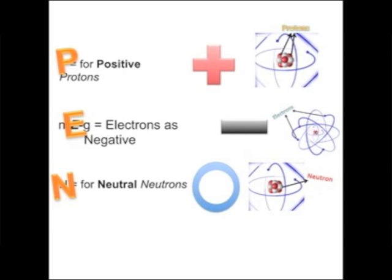To help you remember, think P for positive protons, E for those negative electrons, and N for neutral neutrons. To remember all of them, think of the mnemonic device PEN — P-E-N: protons, electrons, neutrons. You'll discuss more about atoms later. Just know these key terms and properties for now.